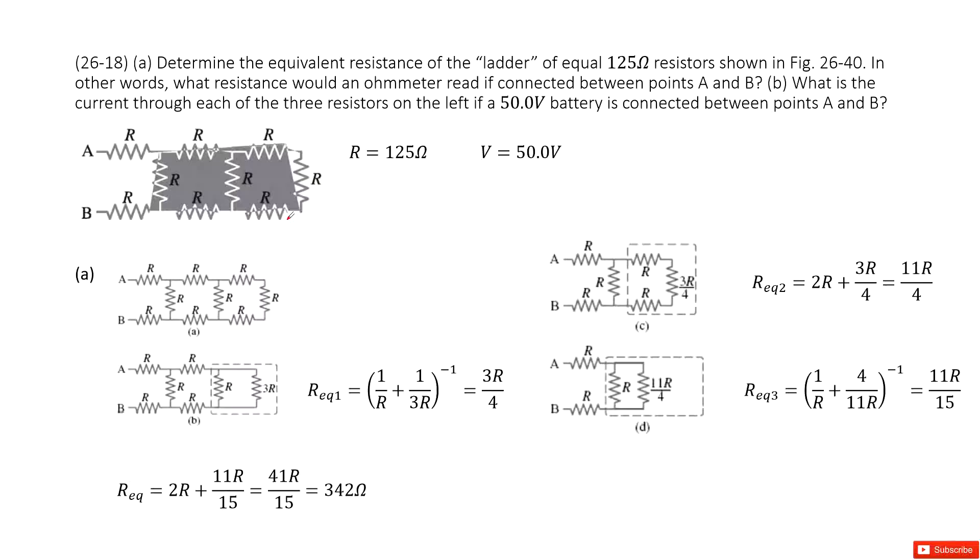Chapter 26 is about DC circuits. You can see if we look at this picture, it is called a ladder circuit. So we need to find equivalent resistance for this circuit. That means the resistance from point A to point B.